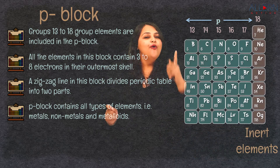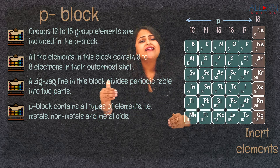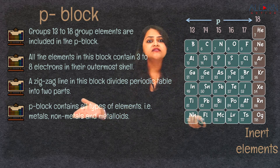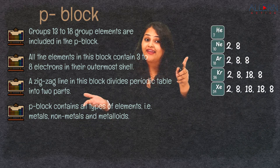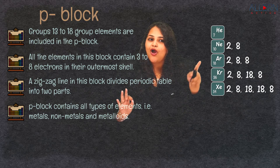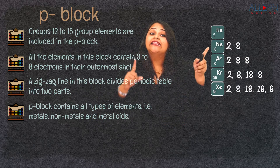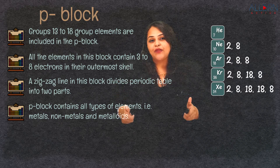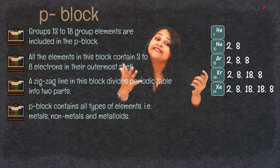Along with metals, non-metals, and metalloids, the P block also has one group called the inert group or noble group. These elements, even when given a chance, will never react with any other element because they are satisfied — their outermost shells are completely filled. Examples include neon (Ne), argon (Ar), krypton (Kr), and xenon (Xe). All of them have a complete outermost orbit — they have an octet — and so the outermost shell is completely filled, making them stable.